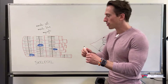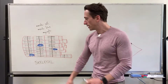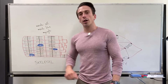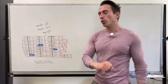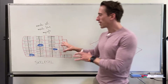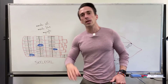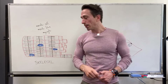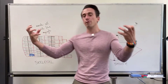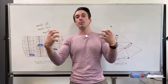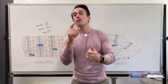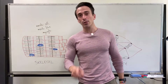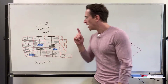Now you can see a couple of things. First, it has multiple nuclei — more than one. The reason why is because embryologically when you were developing, different stem cells came together to form just a single muscle cell. That's why it has multiple nuclei.